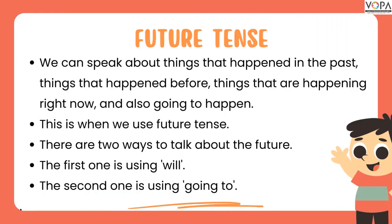Now, let's see about future tense. We can speak about things that happened in the past, things that are happening right now, and also things going to happen — this is when we use future tense. There are two ways to talk about the future: the first one is using 'will' and the second one is using 'going to'.